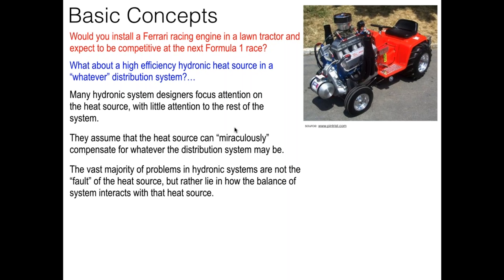A classic example: take a low temperature heat source like a geothermal heat pump. A typical standard water-to-water geothermal can supply about 120°F as its maximum. If you connect that to a system with baseboard sized around 180°F water temperature, you're going to have immediate problems. The baseboard simply can't get rid of the heat at low water temperature, and the heat pump can't get rid of the heat either. The heat pump is going to short cycle or trip out on a high refrigerant pressure safety. It's really about compatibility between the heat source characteristics and the distribution system.